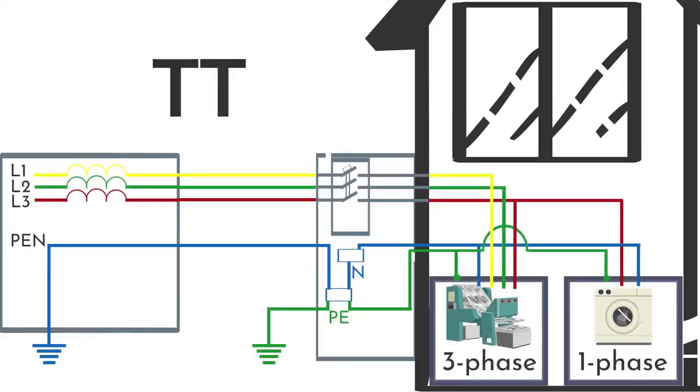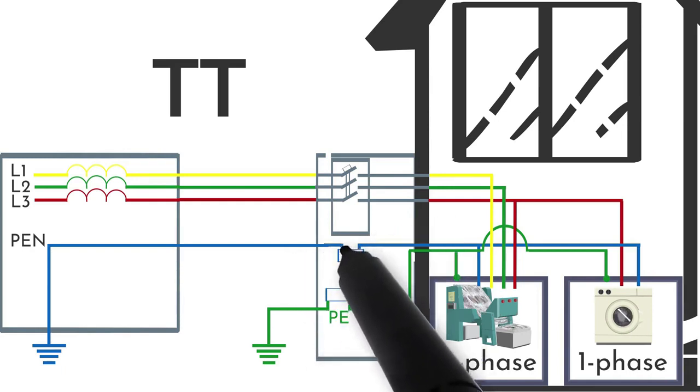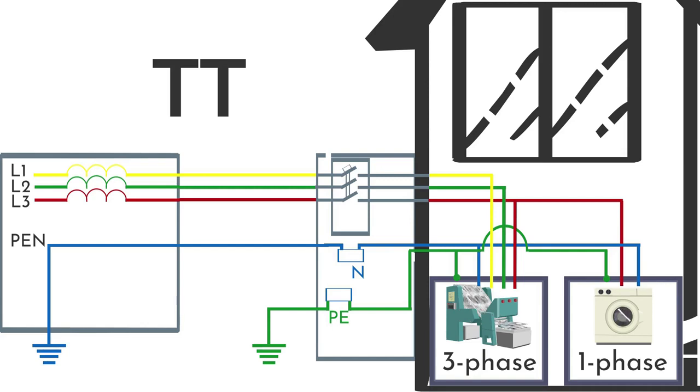Next, let's discuss the TT grounding system. It is used if it is not possible to protect the PEN conductor within the TN-CS system. This circuit can be described in the following way.